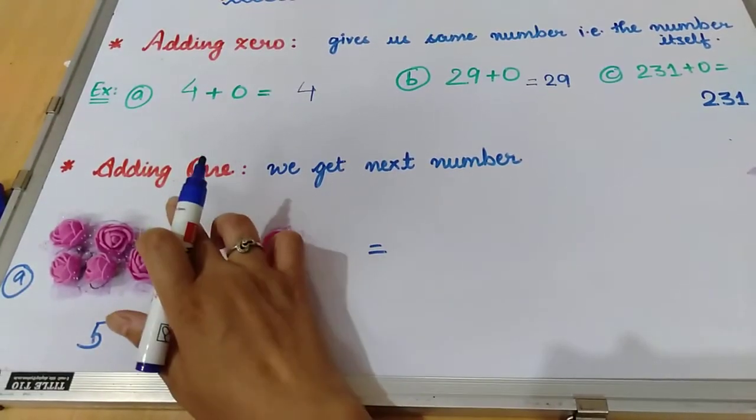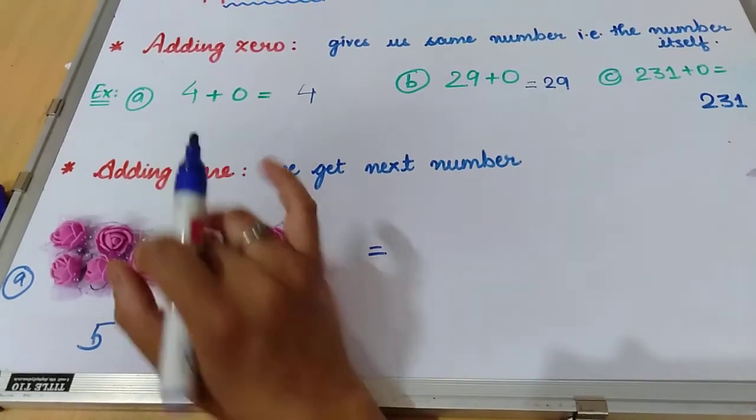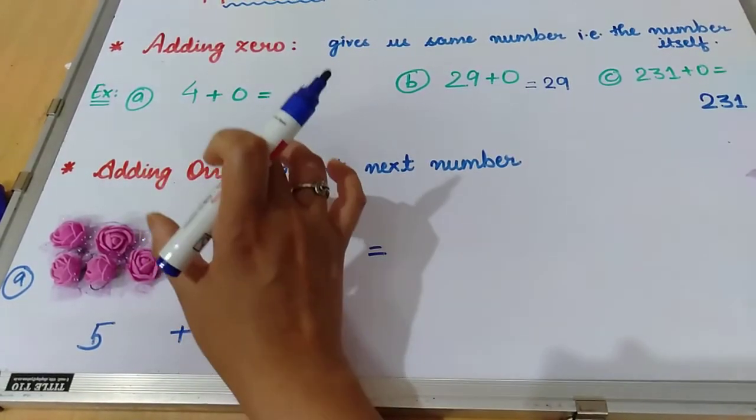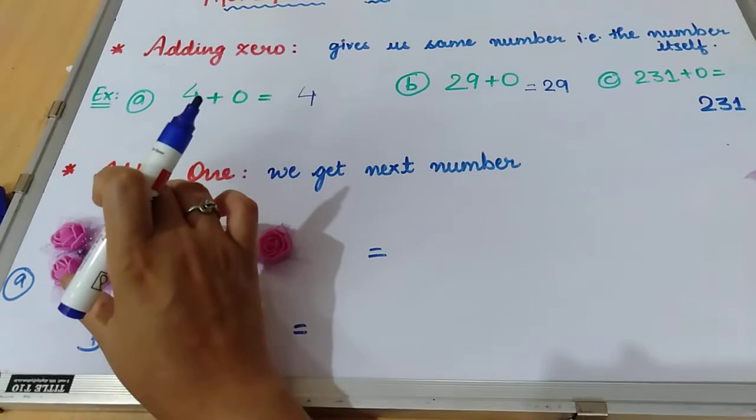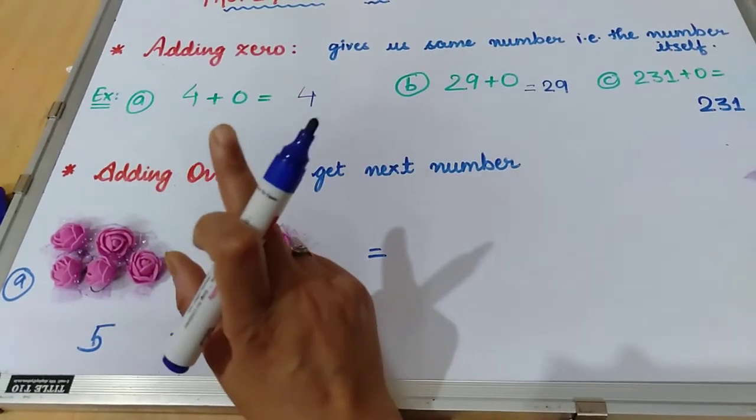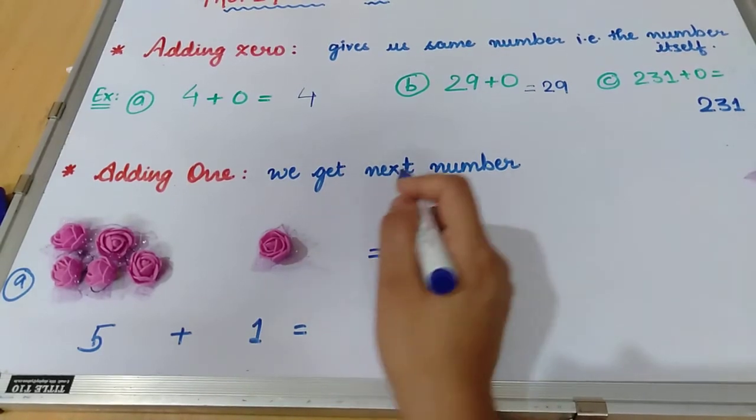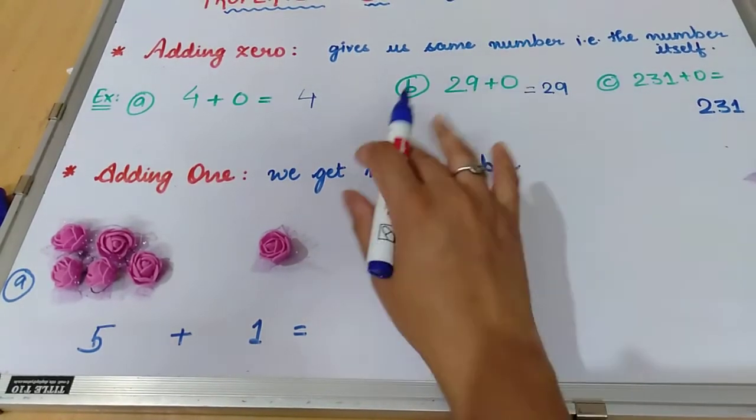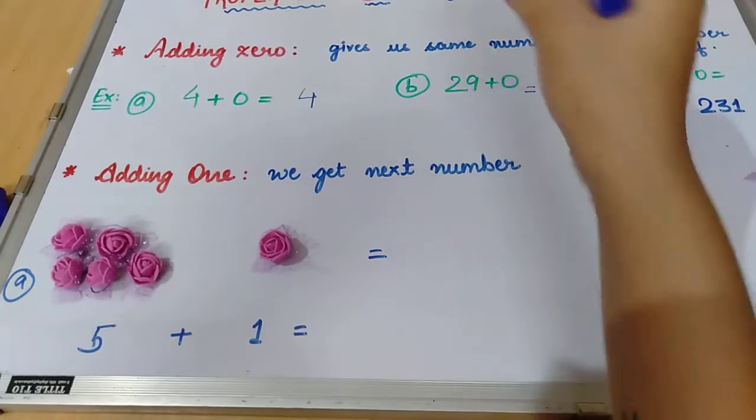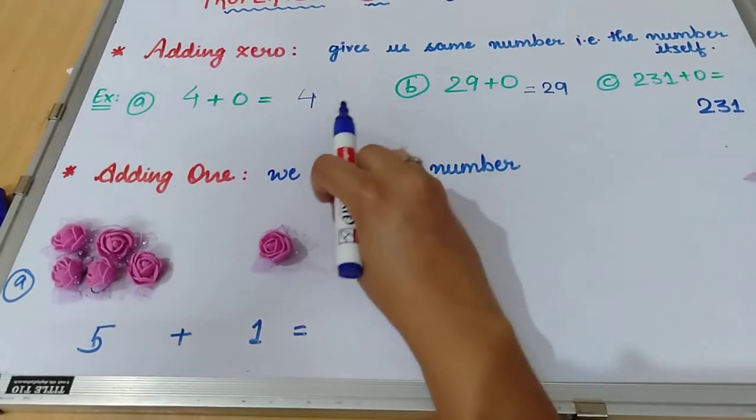This is our second property. When we add one to a given number, we always get the next number. Jise koi bhi number diya gaya hai aur usmei humne one add kar diya toh hummei uski just baad wala number milega.